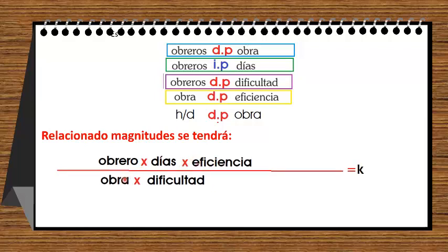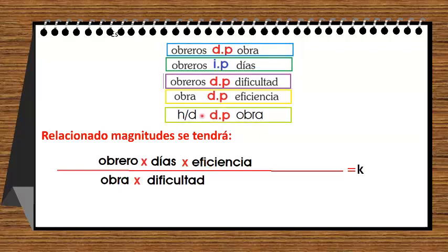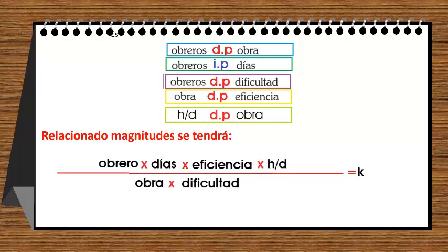Es directamente proporcional, por lo tanto ambos valores se van a dividir. Finalmente, horas diarias directamente proporcional a obra: se van a dividir horas diarias entre obra; como obra está abajo, horas diarias va a ir arriba. Todo esto siempre va a ser igual a una constante de proporcionalidad. Tener en cuenta esta relación para resolver problemas de regla de tres compuesta.